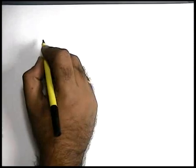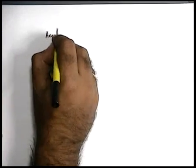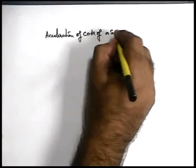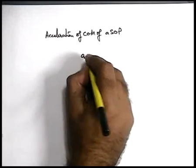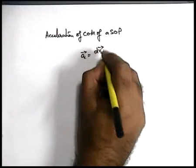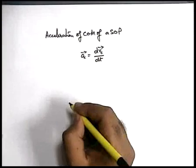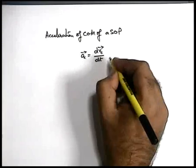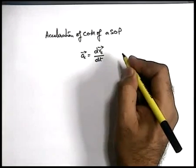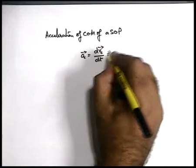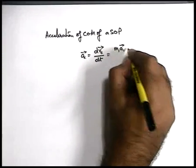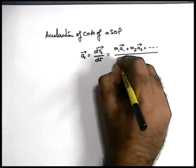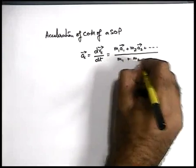In a similar manner, we can also calculate the acceleration of centre of mass of a system of particles. As we know, the acceleration vector can be written as the time derivative of the velocity vector. Since the velocity vector has just been written, the derivative of individual velocities gives individual accelerations. So the previous expression gets modified as m1a1 vector plus m2a2 vector plus and so on, upon the sum of masses m1 plus m2 and so on.